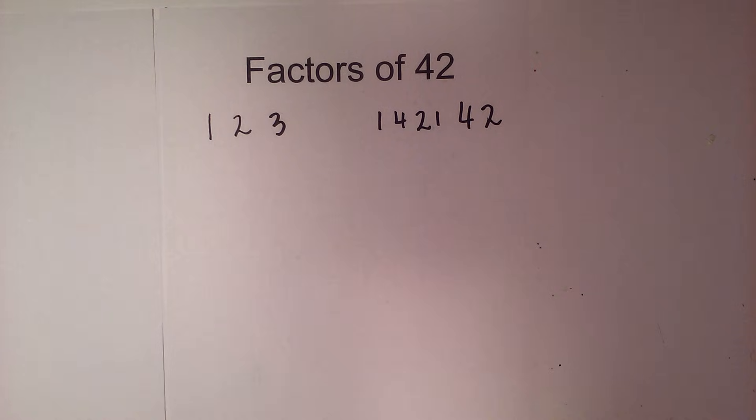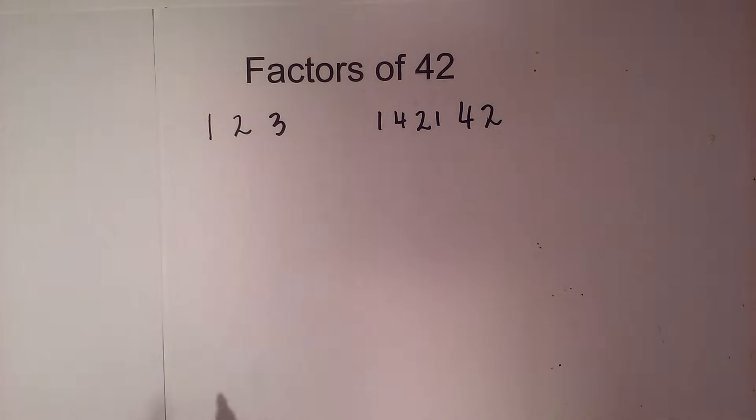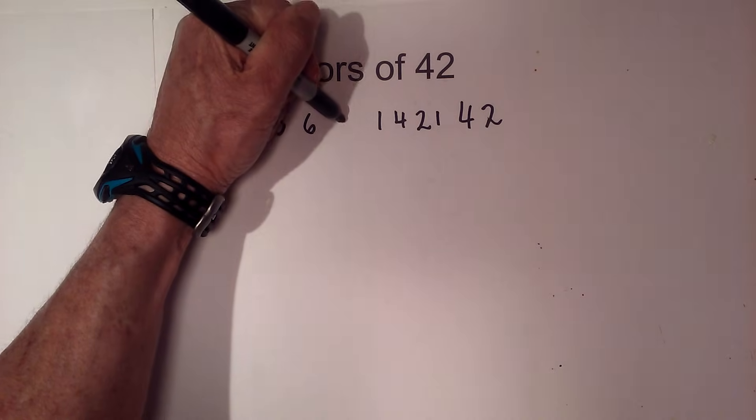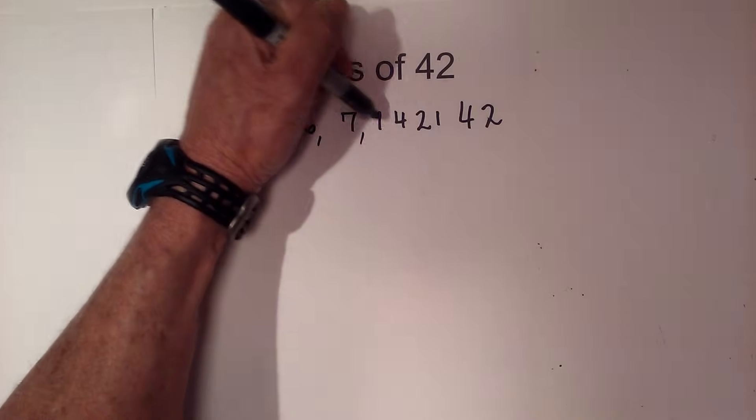4 does not go into 42 because 4 times 10 is 40 and 4 times 11 is 44. 5 will not go in because it does not end in a 5 or 0. Now 6 will go into it if you multiply 6 times 7.